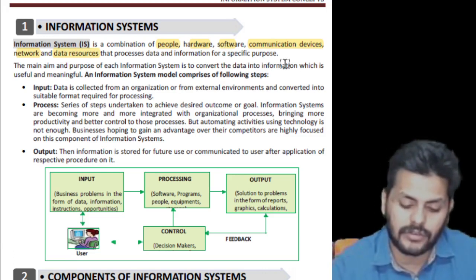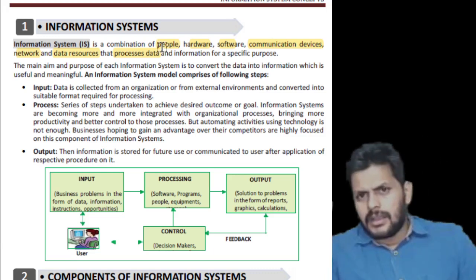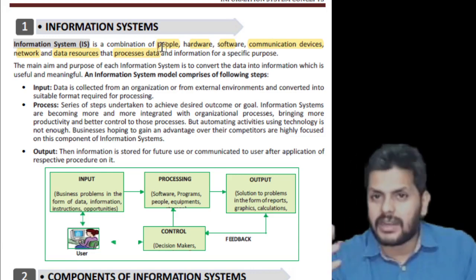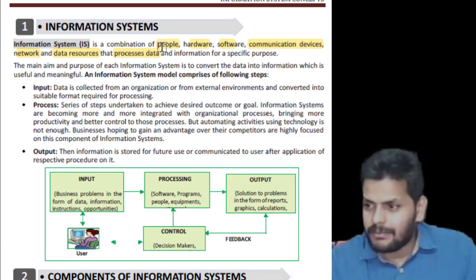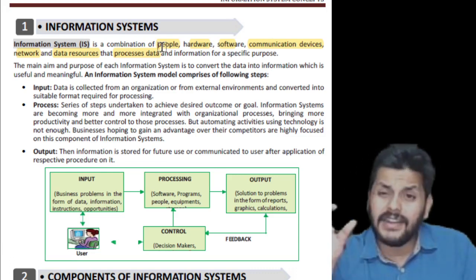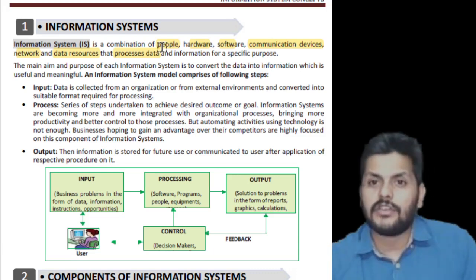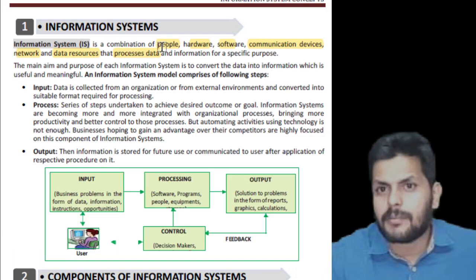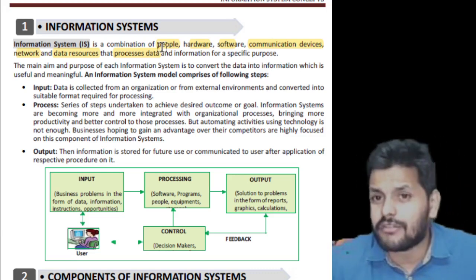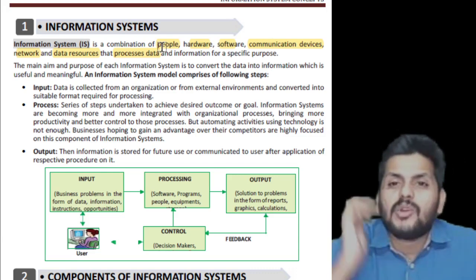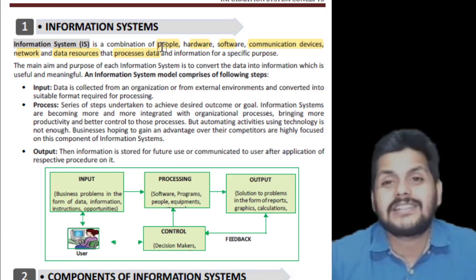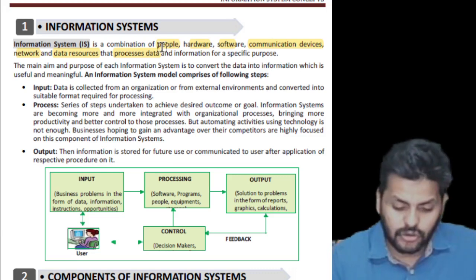Software is split into two: system software, which is the operating system, and application software, which does specific tasks. Photoshop, MS Office — with Word, Excel, PowerPoint — VLC media player, Acrobat PDF reader, Chrome or Mozilla — these are all application software. Windows, Linux, Unix, Mac — those give life to the hardware and are called system software. Software is broadly classified into these two types.